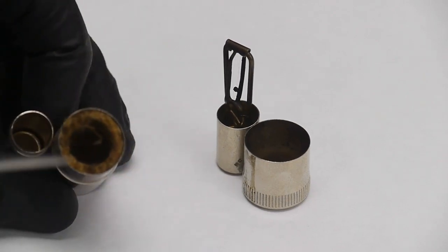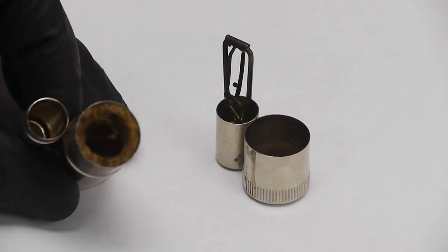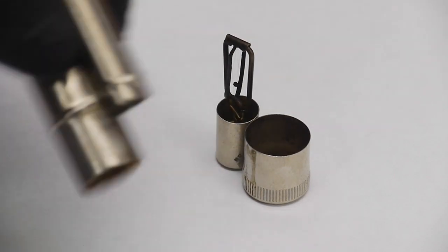This half of the lighter has a wick that's soaked with methanol, so that the space in here is filled with methanol vapor, but if we tip it over, no liquid comes out.